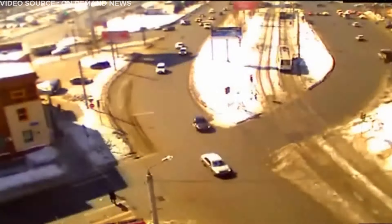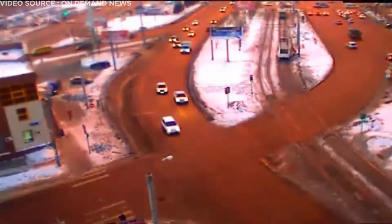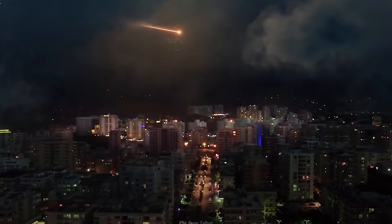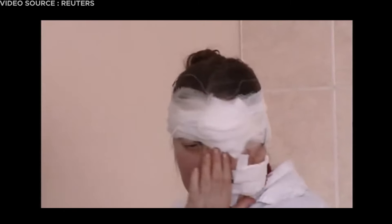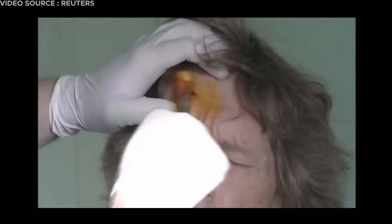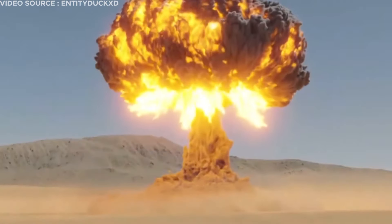These actual incidents underscore the potential risks posed by celestial bodies impacting our planet. The impact of this asteroid caused widespread damage, shattering windows across the city and injuring approximately 1,500 people due to flying glass. When the asteroid exploded in the sky, it released energy equivalent to the detonation of about half a million metric tons of TNT.